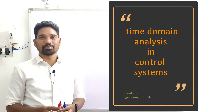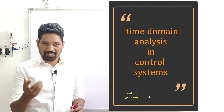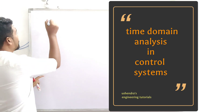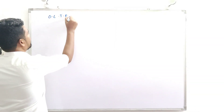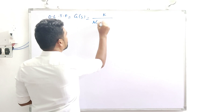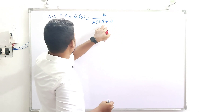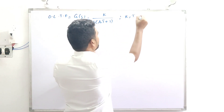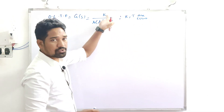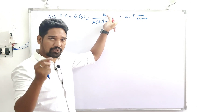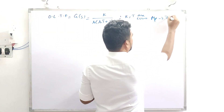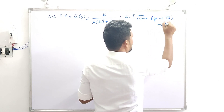Control Systems Time Domain Analysis. The problem: the open-loop transfer function is given as G(s) = K / [s(sT + 1)], where K and T are constants. By what factor does K have to be reduced for the maximum overshoot to reduce from 75% to 25%?